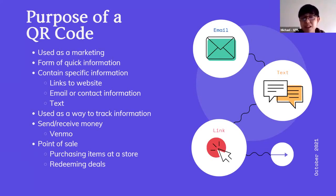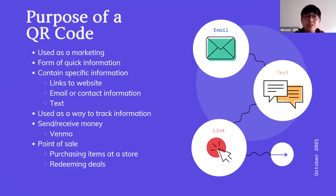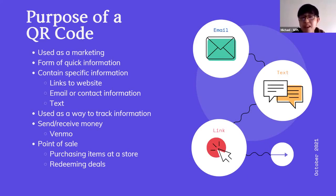QR codes are pretty much everywhere now — Kate mentioned they went away for a while, but now they're very prevalent because of the pandemic. A QR code will typically contain links to websites, email information, contact information, or just basic text. Companies can put out QR codes and track how many people have scanned them, which helps them know whether their advertising is working — maybe 100 people scanned it, or 10, or zero.